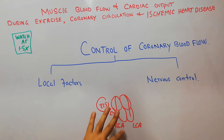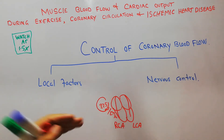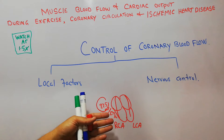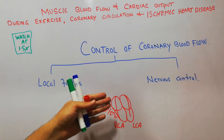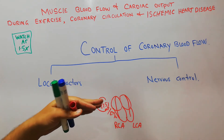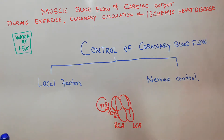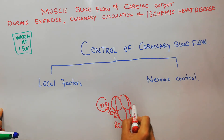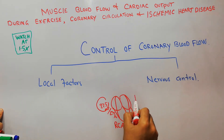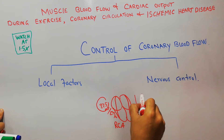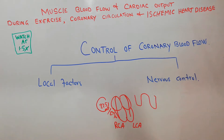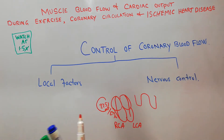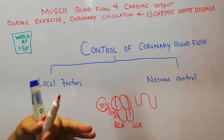We also discussed that there are changes in the amount of blood flow to the heart during exercise or other conditions. The amount of blood coming to the muscles decreases in systole and increases in diastole, because when the muscles of the heart contract, the blood vessels get compressed, reducing blood flow, which then increases during relaxation.